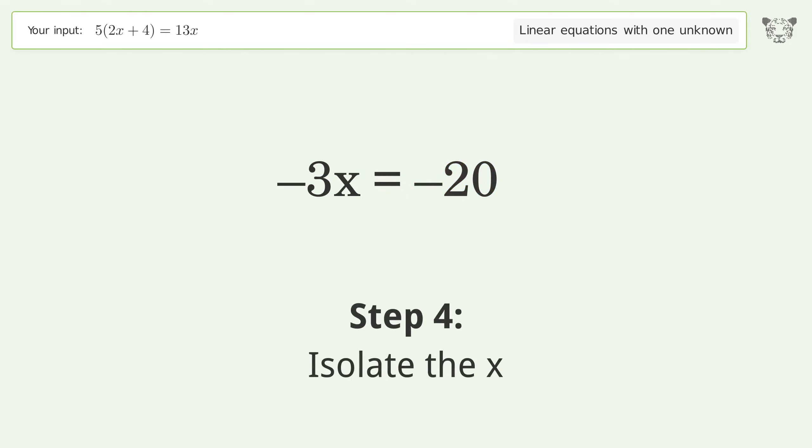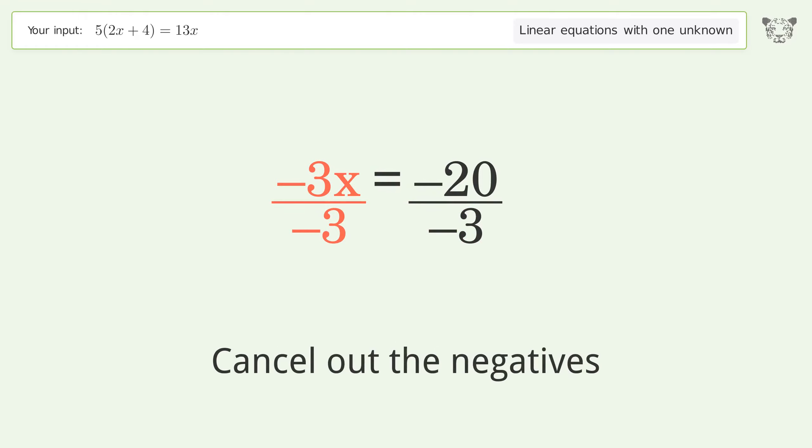Isolate the x. Divide both sides by negative 3. Cancel out the negatives, simplify the fraction, and cancel out the negatives.